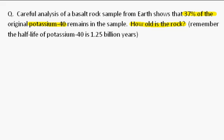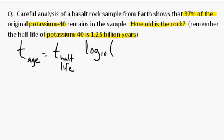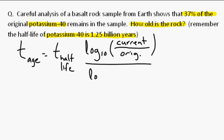We have a reminder that the half-life of potassium-40 is 1.25 billion years. You might remember the formula that we use for this one. The time, that is the age, is equal to the time that is the half-life times log base 10 of the current amount over the original, all divided by the log base 10 of one-half.